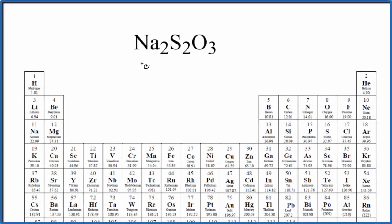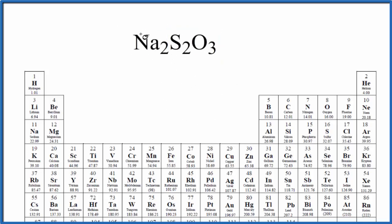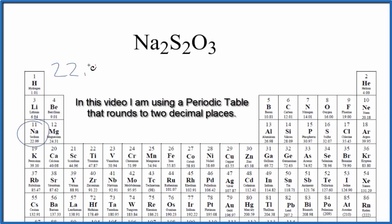In this video, we'll find the molar mass for Na2S2O3. This is sodium thiosulfate. So to find this out, we first find sodium on the periodic table — it's right here. That's 22.99, and the units are grams per mole.